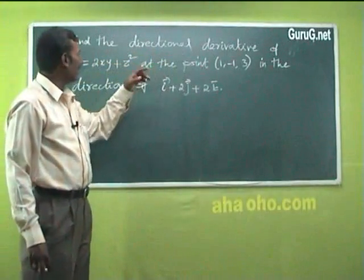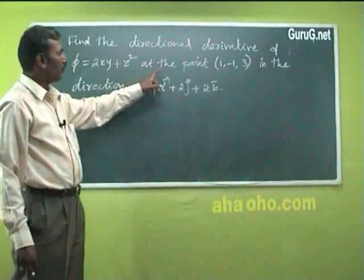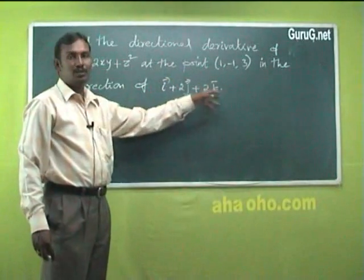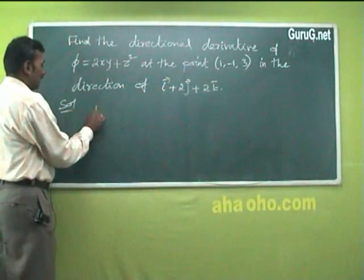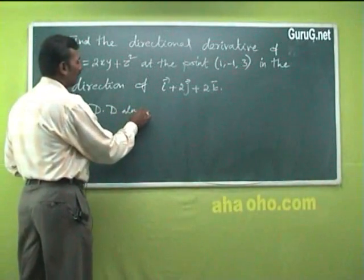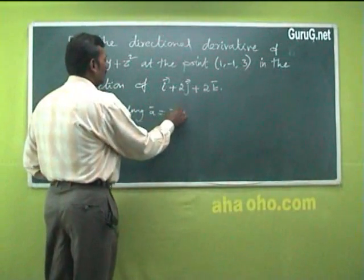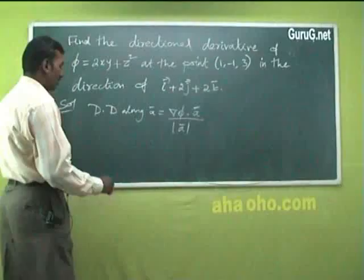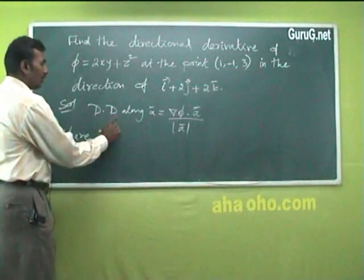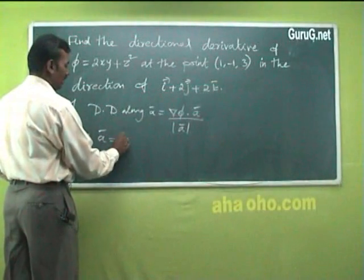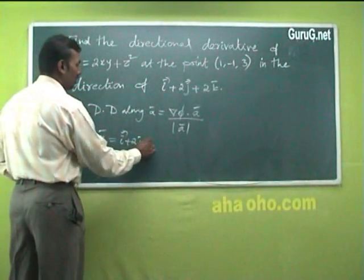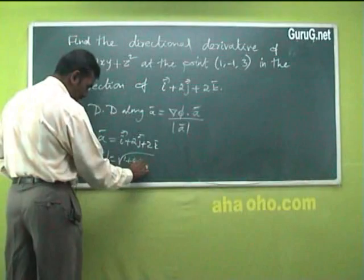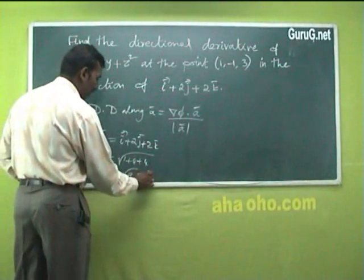Next problem: find the directional derivative of φ = 2xy + z² at the point (1, −1, 3) in the direction of i + 2j + 2k. The formula for directional derivative along vector A is del φ · A / |A|. Here A = i + 2j + 2k and |A| = √(1 + 4 + 4) = √9 = 3.